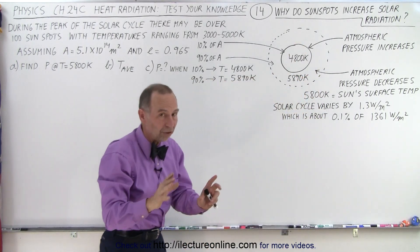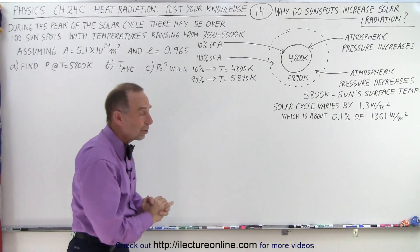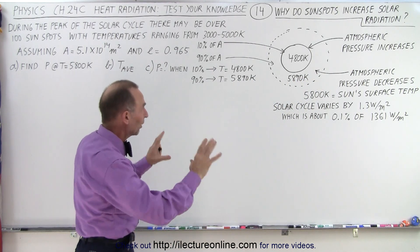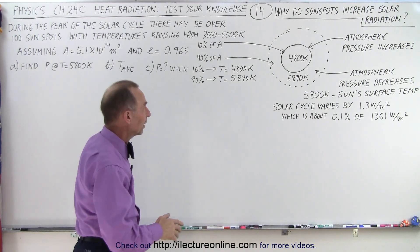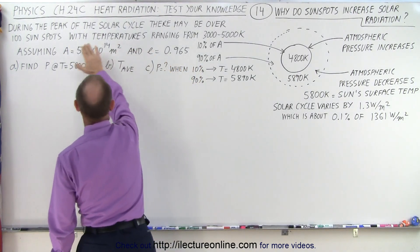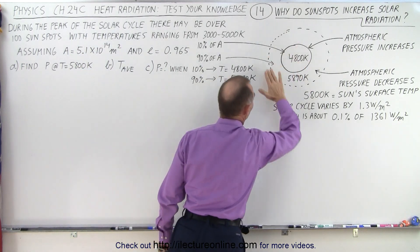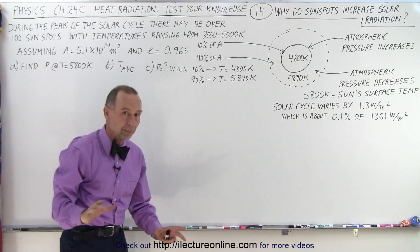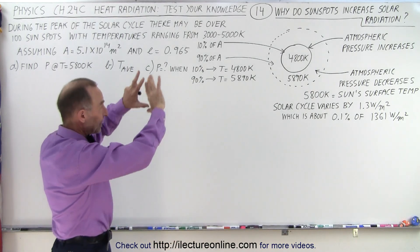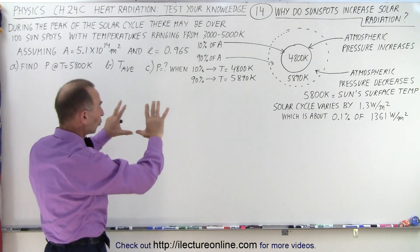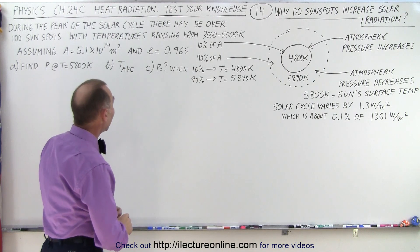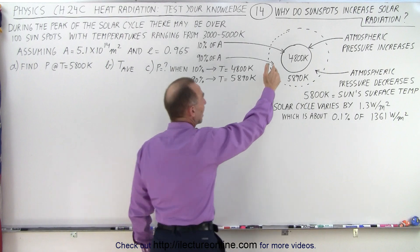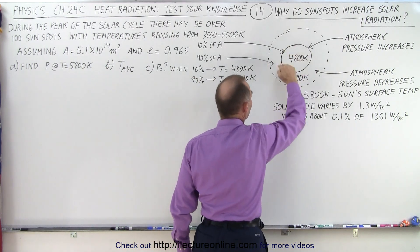Let's assume the temperature around the sunspot is 5,890 Kelvin — about 90 degrees Kelvin warmer than the rest of the surface of the Sun. Now let's assume that the total area of that region, the sunspot plus the area around the sunspot, is 5.1 times 10 to the 14 square meters, which is larger than the area exposed to the Sun from the Earth.